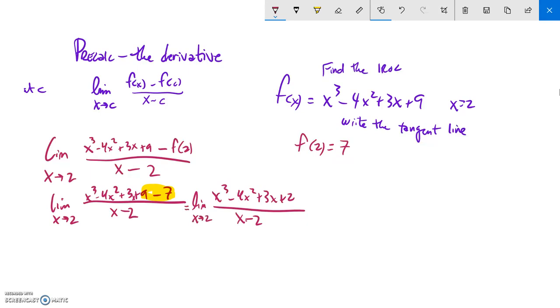So now I have this thing. I can do this division—this divided by that. So I'll use some synthetic division. 2 goes into this: 1, negative 4, 3, and 2.